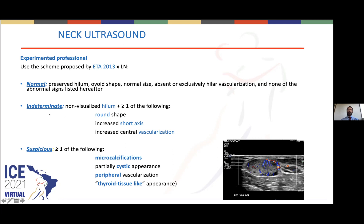An indeterminate lymph node is one with no hilum plus one or more of the following: round shape, increased short axis, or increased central vascularization. Normal lymph nodes are those that do not have any of the characteristics described above.